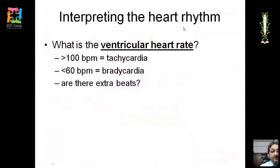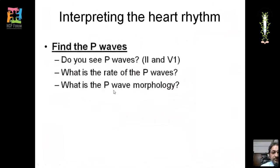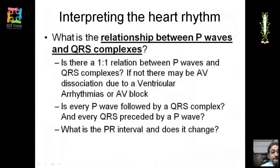When interpreting heart rhythm: first determine the ventricular rate (above 100 is tachycardia, below 60 is bradycardia); check for extra systoles (atrial or ventricular); examine P waves in lead II and V1 for rate and morphology; assess whether there is a one-to-one relationship between P waves and QRS. If not, consider AV dissociation due to AV block or ventricular arrhythmia. Note the PR interval and whether it is changing.